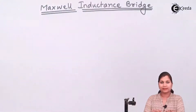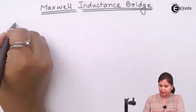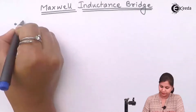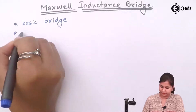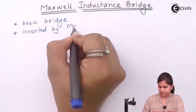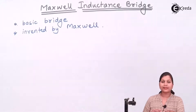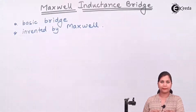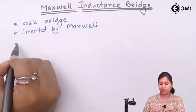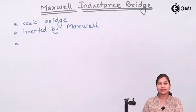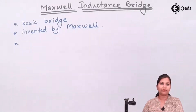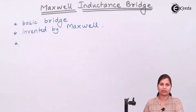This Maxwell inductance bridge is invented by the scientist Maxwell. It is the most basic and simple bridge in its construction and it is used for the measurement of inductance. It measures inductance by comparing the unknown value of inductance with a known value of inductance, or a standard inductance.